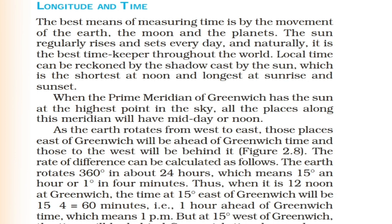The Earth rotates 360 degrees in about 24 hours, which means 15 degrees per hour and 1 degree in 4 minutes. Thus, when it is 12 noon at Greenwich, the time at 15 degrees East of Greenwich will be 15 multiplied by 4 equals 60 minutes — that is 1 hour ahead of Greenwich time.